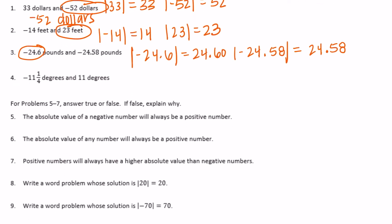And then negative 11 and 1 fourth degrees and 11 degrees. The absolute value of negative 11 and 1 fourth would be 11 and 1 fourth. The absolute value of 11 degrees would be equal to 11. So which is further from 0? Negative 11 and 1 fourth.